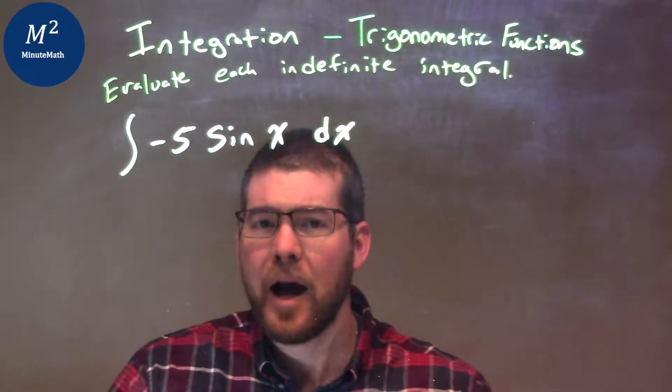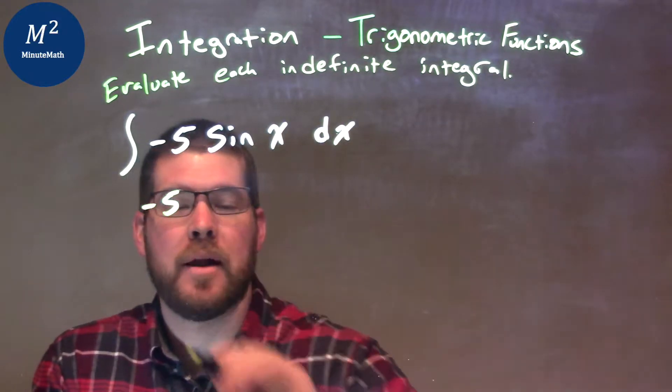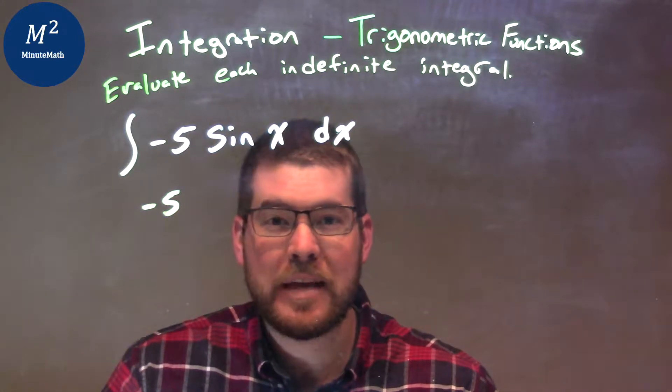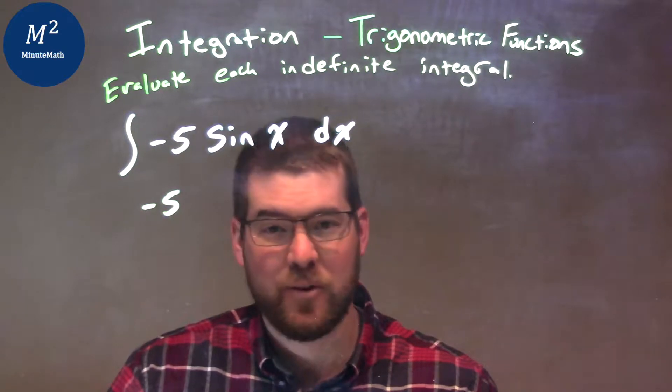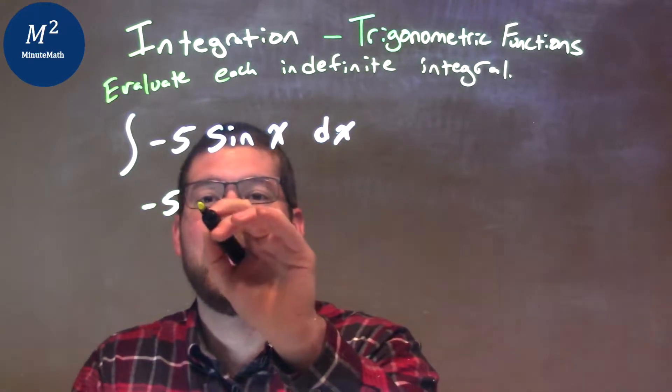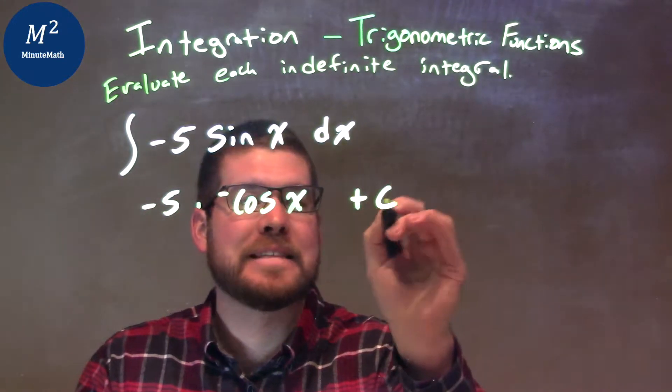Alright, well the constant I can just leave out front, so I'm going to leave that constant out there. I don't really need to worry about it. So now I have to think, okay, what is the integral of sine? Well, the integral of sine is, when I take the derivative it gives me sine, and that's going to be a negative cosine of x. And then we don't forget our plus c.